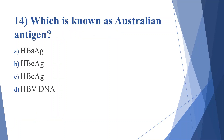Fourteenth question: which is known as Australian antigen. Option A: HBs antigen. Option B: HBe antigen. Option C: HBc antigen. Option D: HBV DNA. Answer is option A, HBs antigen.